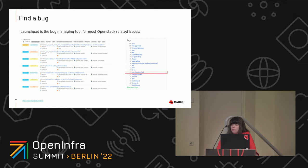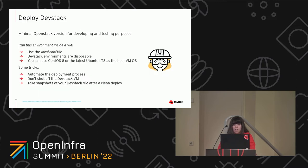Once you have all of that set up, you can go ahead and find a problem for yourself. We call the good first issues 'low-hanging fruits,' so check for one of those in Launchpad. Launchpad is what we use to file the different bugs we find. Once you have that, you can go ahead and deploy DevStack. DevStack is a minimal version of OpenStack meant for developing purposes — something you should never use in production because it's not meant to stay consistent long term.